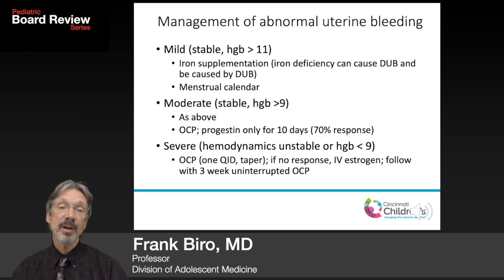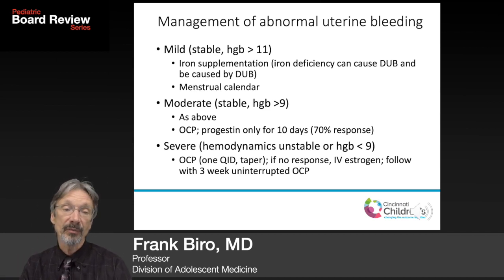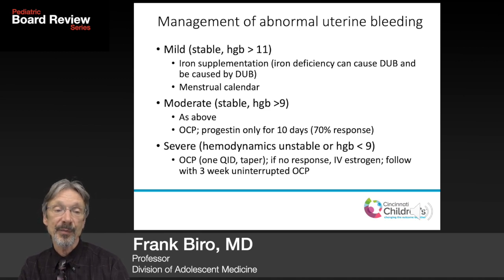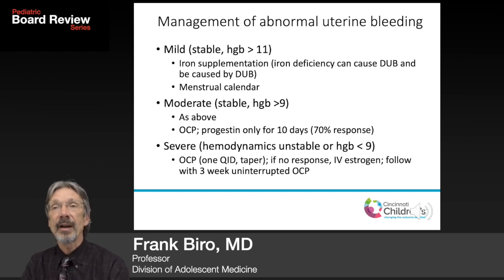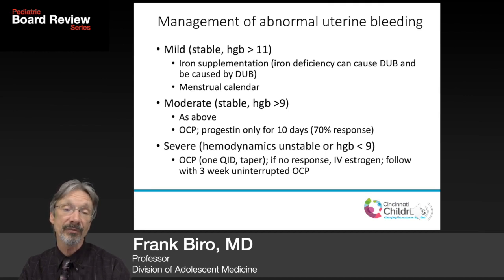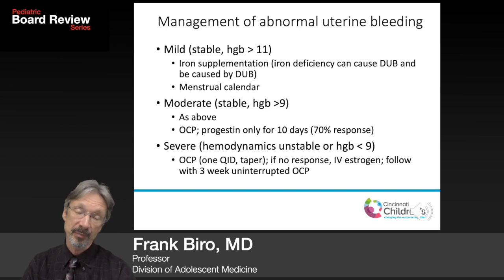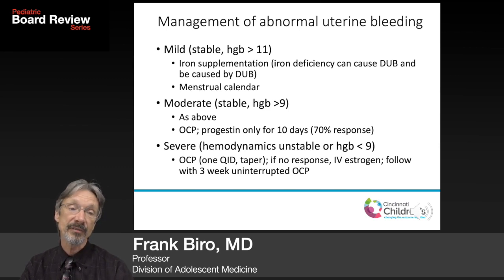Management of mild abnormal uterine bleeding — stable hemoglobin above 11 — includes iron supplementation and a menstrual calendar. The rationale for iron is that dietary intake is typically matched by normal menstrual blood loss, so excess bleeding depletes iron stores. Iron is also a necessary cofactor for optimal platelet function, so iron deficiency can cause or worsen abnormal uterine bleeding because platelets don't function as well.